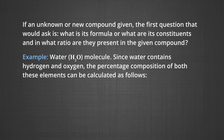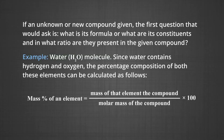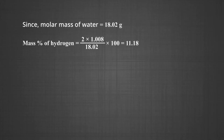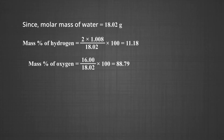For example, the water molecule (H₂O) contains hydrogen and oxygen. The percentage composition can be calculated as: mass percent of an element = (mass of that element in the compound ÷ molar mass of compound) × 100. Since molar mass of water is 18.02 g, mass percent of hydrogen = (2 × 1.008 ÷ 18.02) × 100 = 11.18%. Mass percent of oxygen = (16 ÷ 18) × 100 = 88.79%.